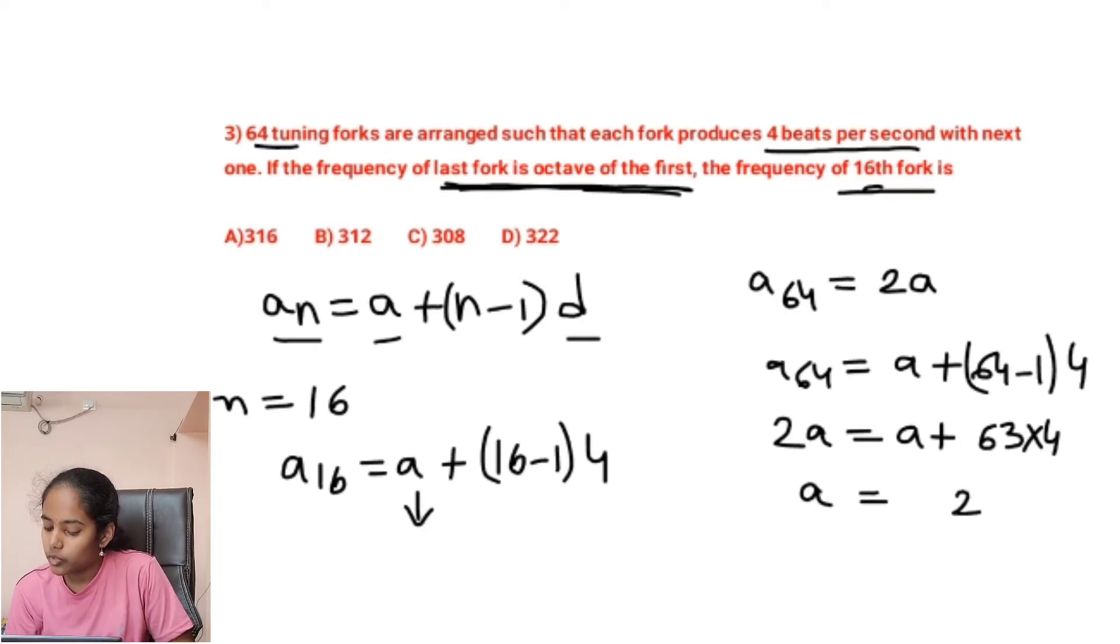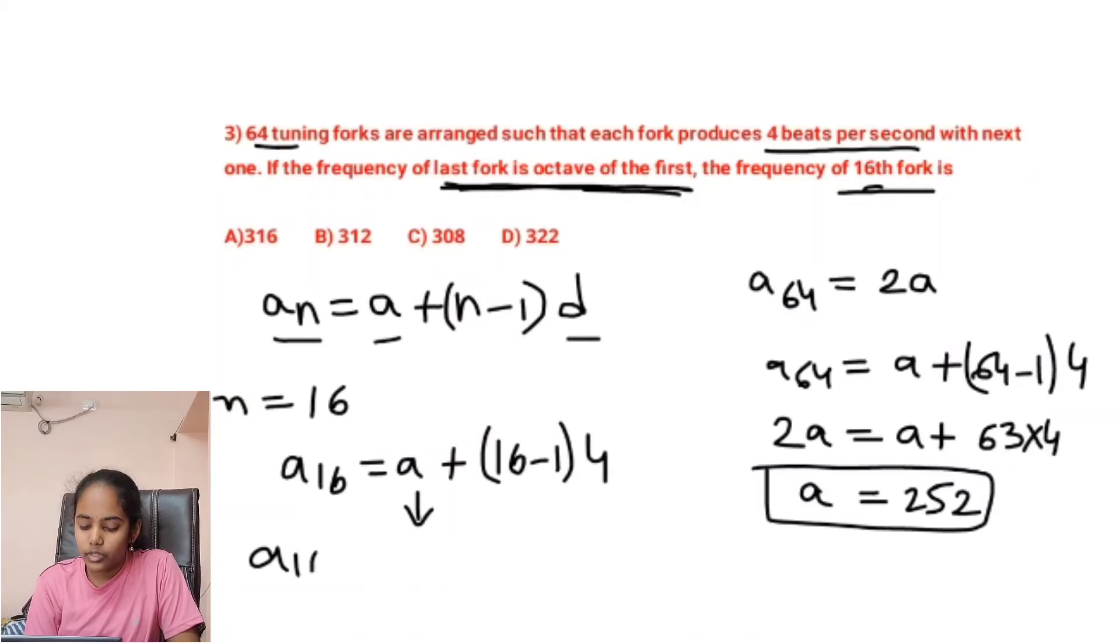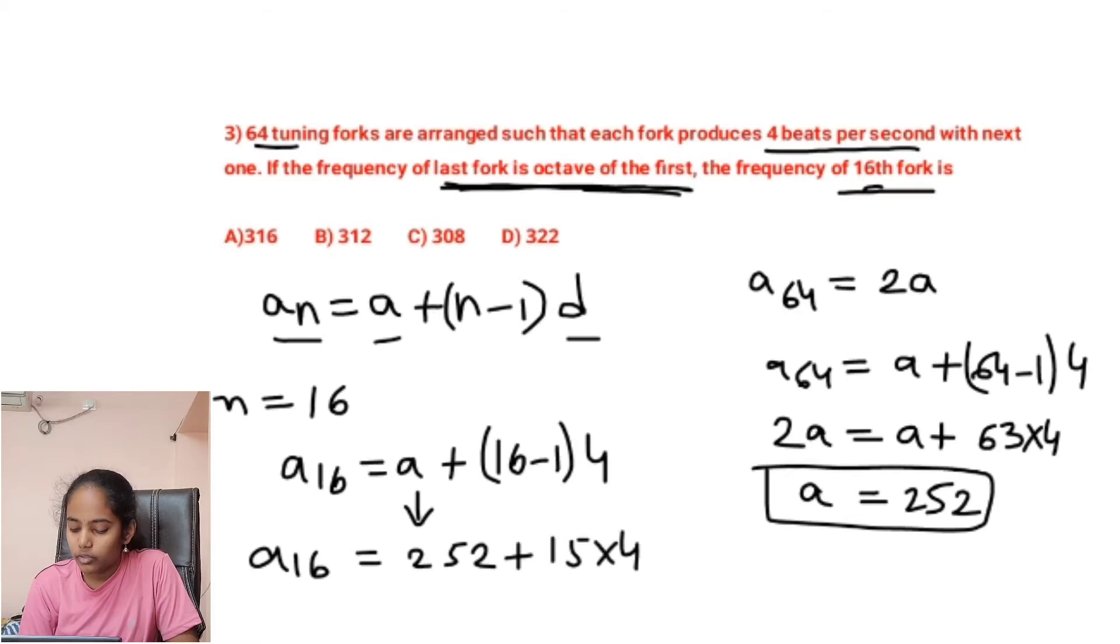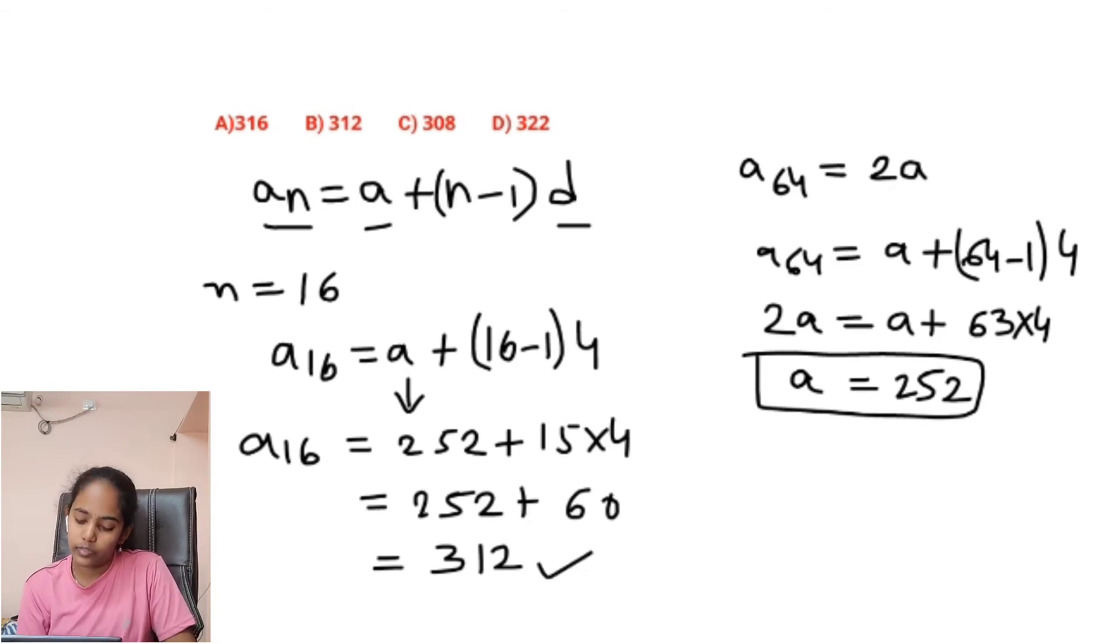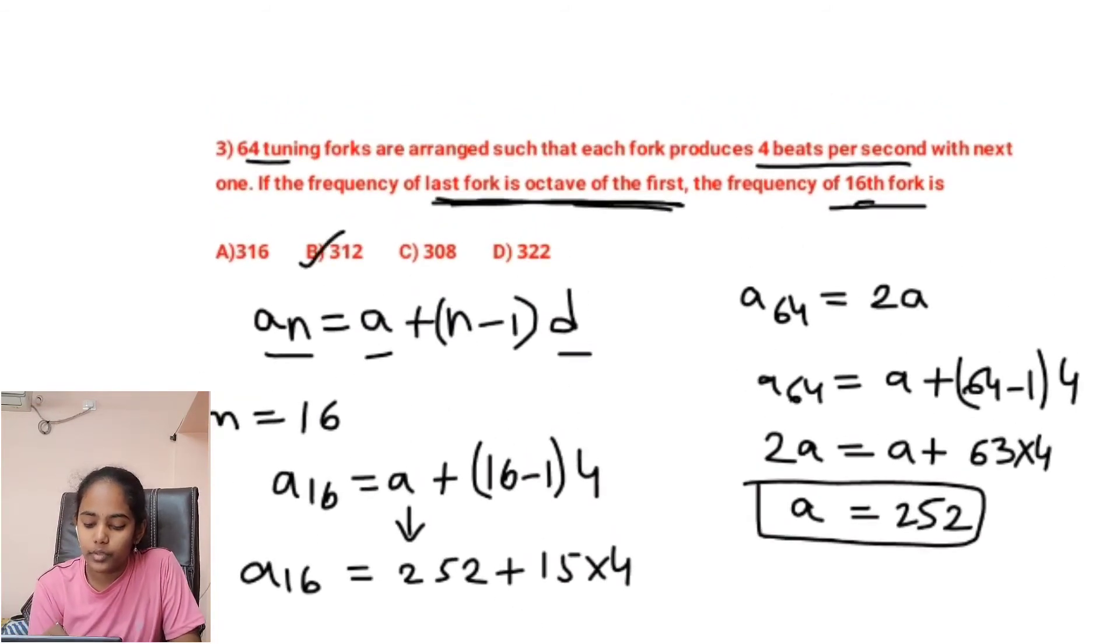So a equals, these are 12, 24, 252. Our a becomes 252. We have to substitute here: a₁₆ = 252 + 15 × 4. So it becomes 312. So frequency of the 16th fork is 312. Our option becomes C.